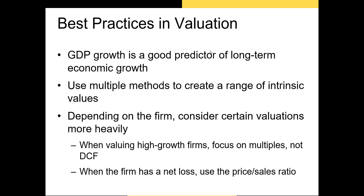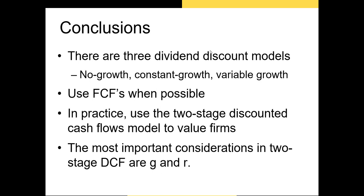Also, if a firm is unprofitable, use the price-to-sales ratio in the market multiples method. To summarize: there are three dividend discount or free cash flow models — zero growth, constant growth, and variable growth — and each is appropriate in different scenarios. Zero growth is for perpetuities, constant growth for blue-chip stocks in mature industries, and variable growth for most other firms where you have information about future cash flows.